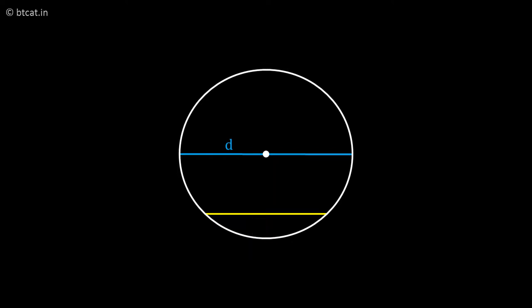Then the next important theorem can be if I join these endpoints of the chord to the center, the angle made there, the angle made at the center by the chord is always double. It is always 2 theta where the theta is the angle made by the chord at any point on the circumference of the circle in the same segment as the center.